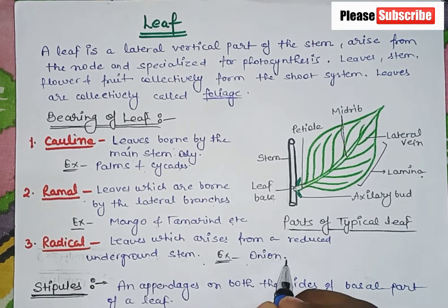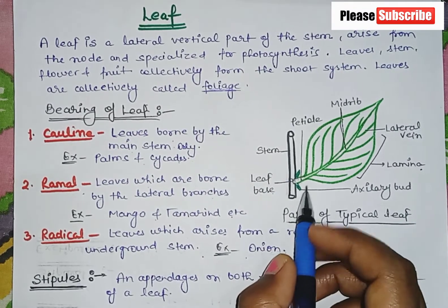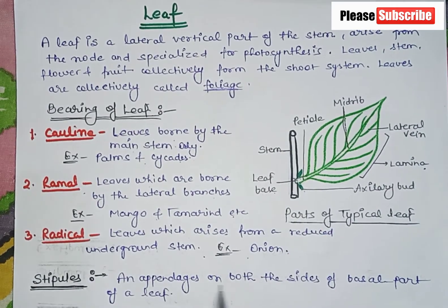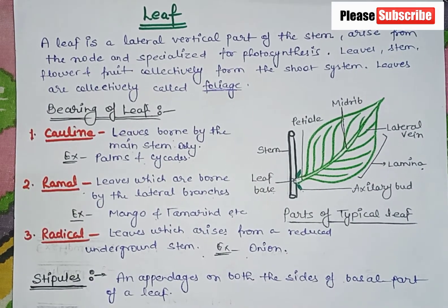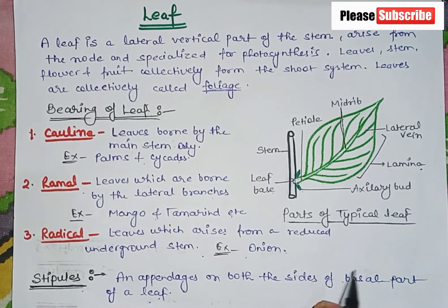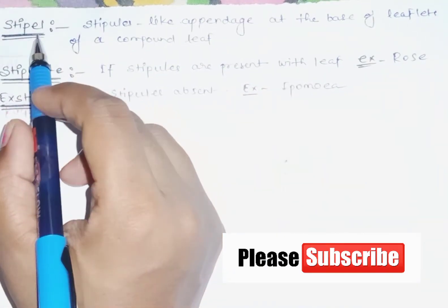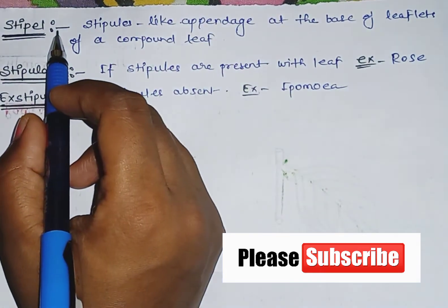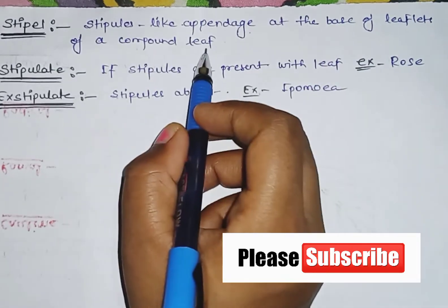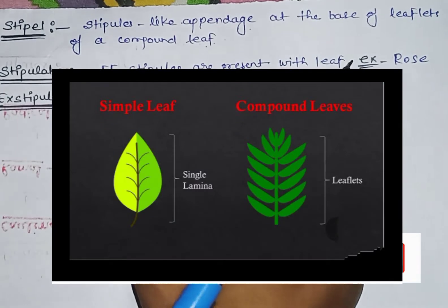An example of radical leaves is onion. Next, let's talk about stipules. Stipules are appendages present on both sides of the basal part of a leaf. There is a difference between stipules and stipels. Stipels are stipule-like appendages at the base of leaflets of a compound leaf.